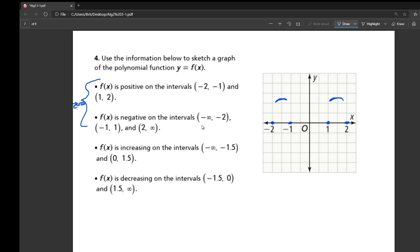So then this says that it's negative from negative infinity to negative 2. So we know it's going to go down like that. We know it's negative from negative 1 to 1. So this one's going to have to do some kind of loop-to-loop down like this. And we know that it's negative from 2 to infinity.